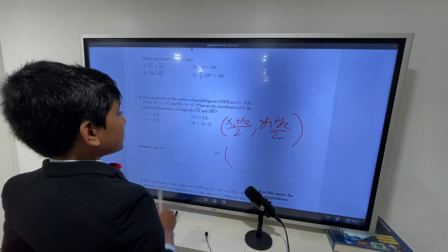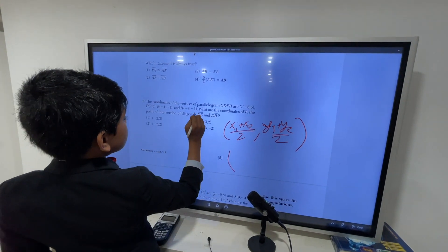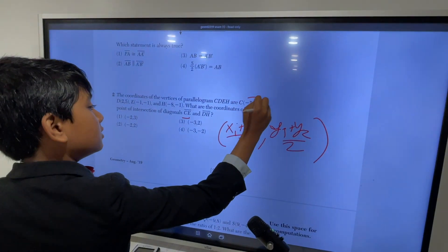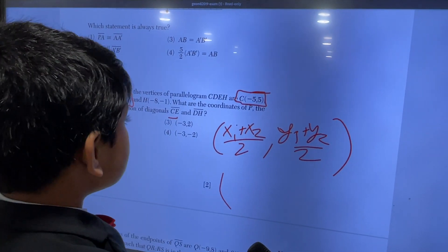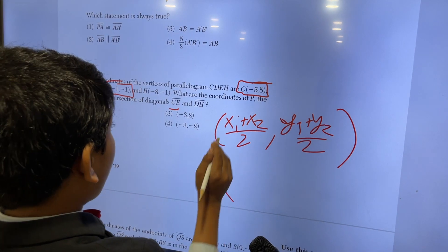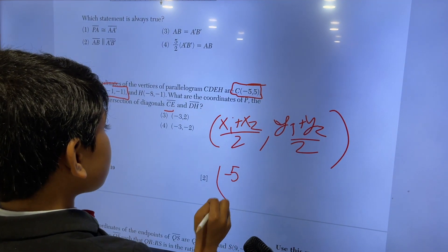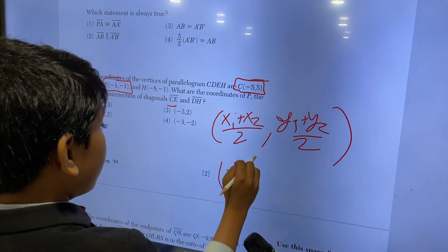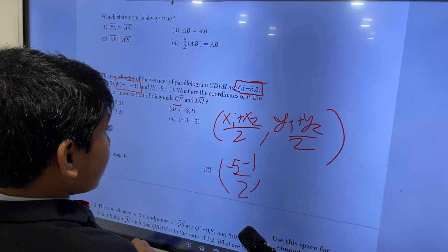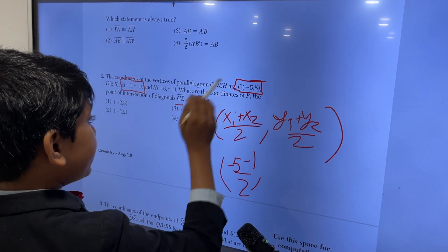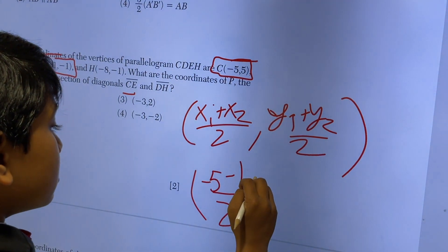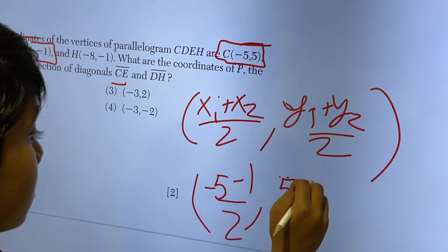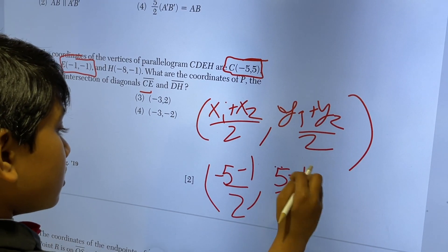So let's take one of the diagonals, precisely CE. So here's C, here's E. So X1 would be negative 5. X2 negative 1. And Y1 would be 5. Y2 would be negative 1.